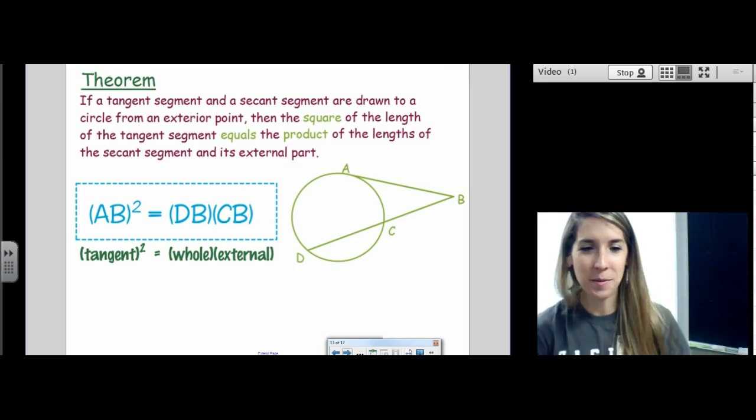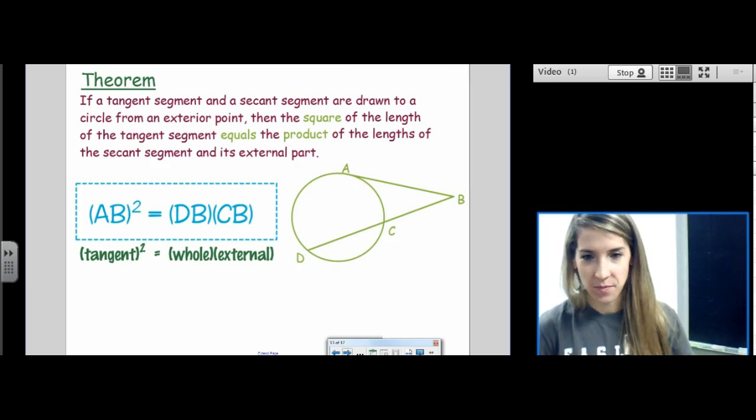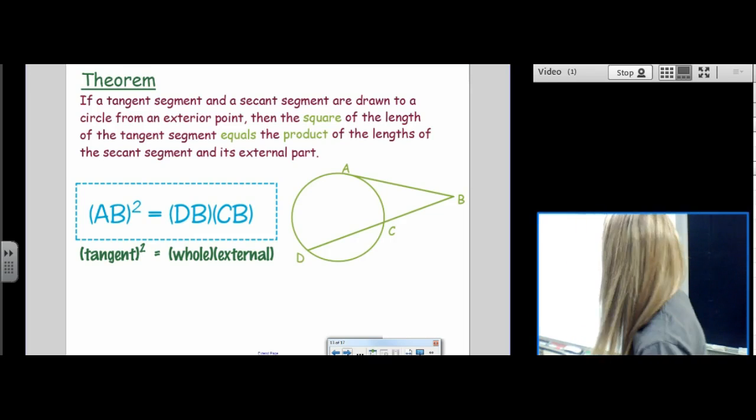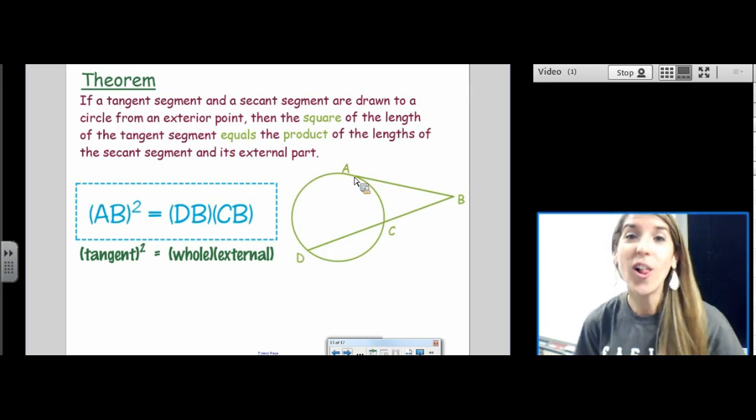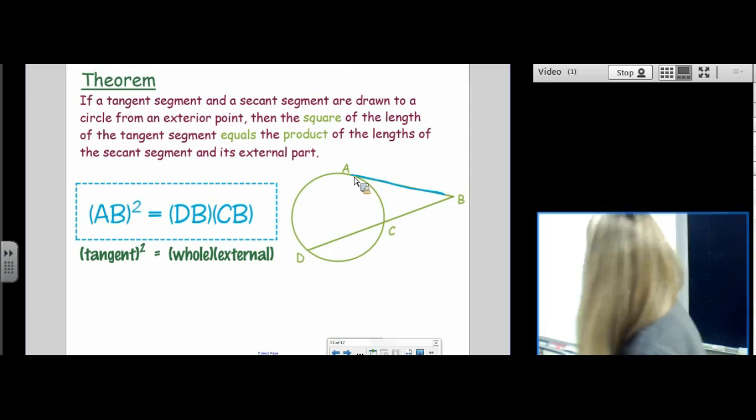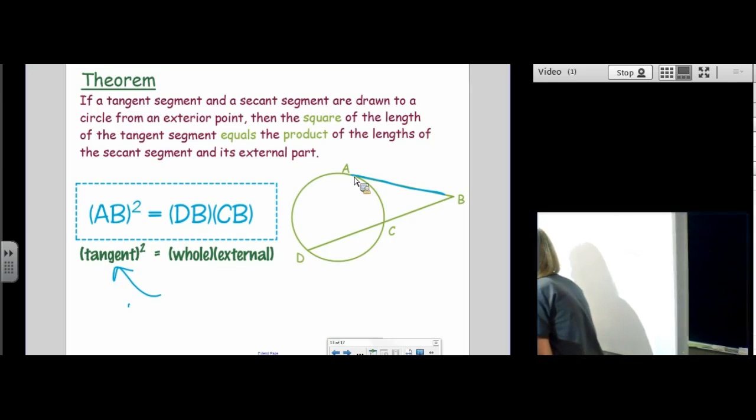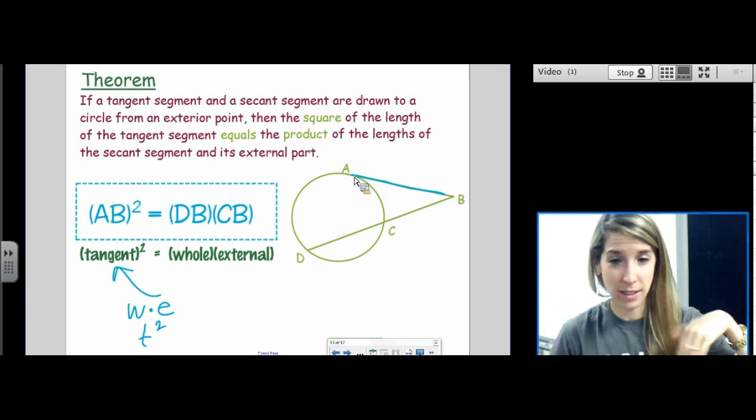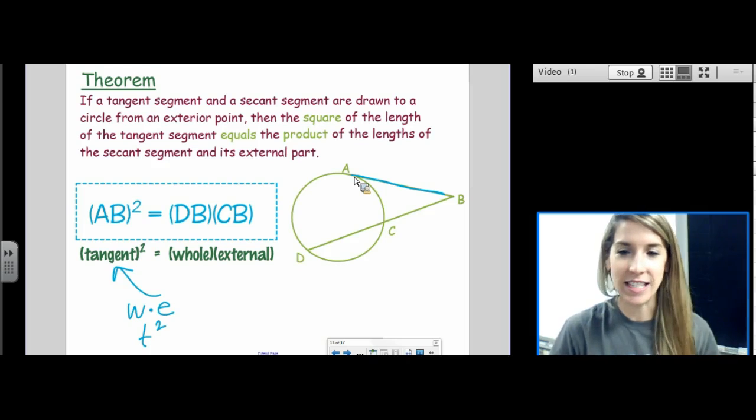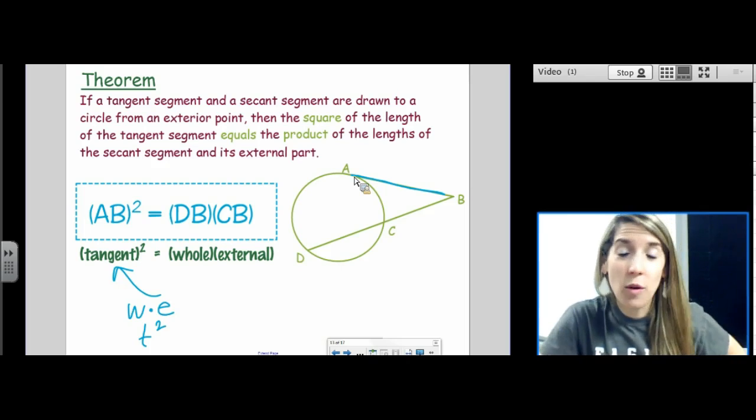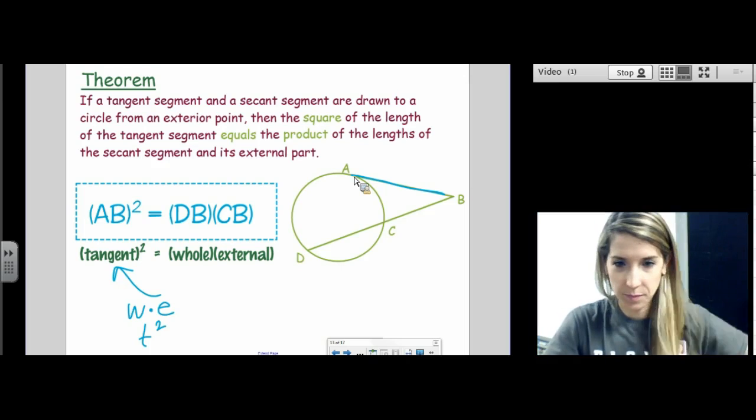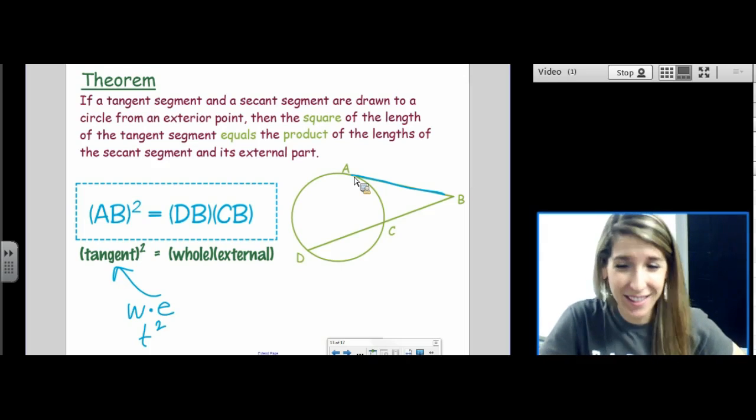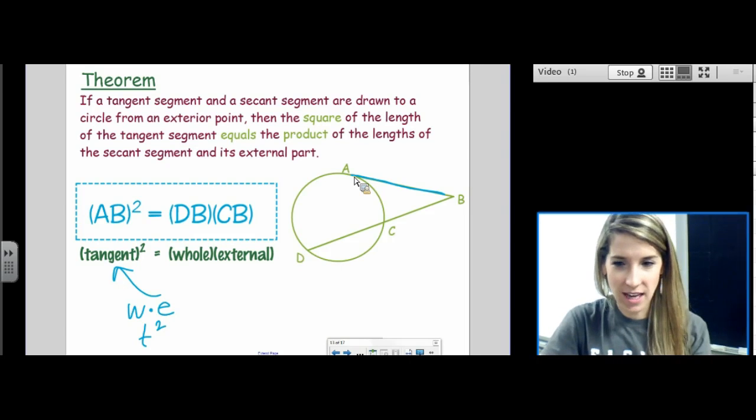Last theorem. I promise you there were three theorems come in threes in this unit. And so, this is the last theorem. Another thing that could happen is we could have a secant and a tangent. Now, if we had a secant and a tangent, with the tangent line, look at this. With the tangent line, the whole is the external. They're the same thing. The whole is the external. So, when I do whole times external, whole times external, it's really just that segment squared. Because the whole is the external. Does that make sense? So, that's why it's tangent squared equals whole times external. Because the tangent is the whole and the external at the same time. So, honestly, for this theorem, you don't have to remember anything differently from the last theorem. Because they're really the same theorem. You can still use whole times external equals whole times external. Because the whole is the external. Have I said that enough?